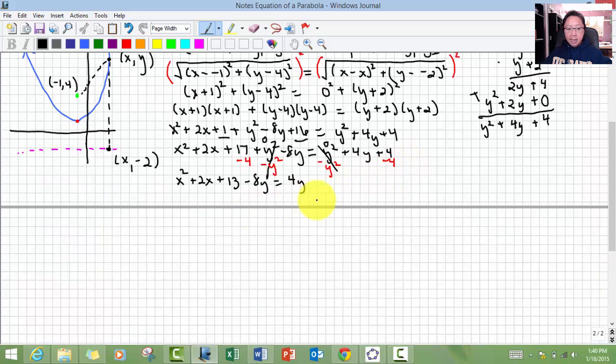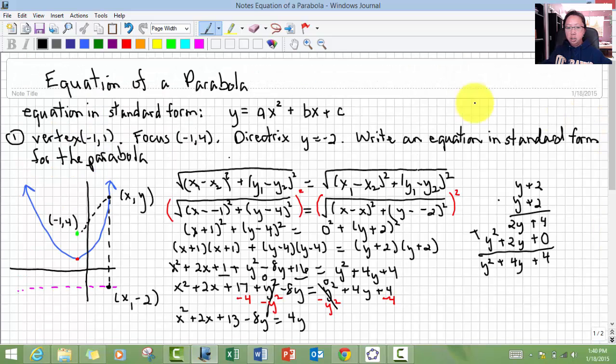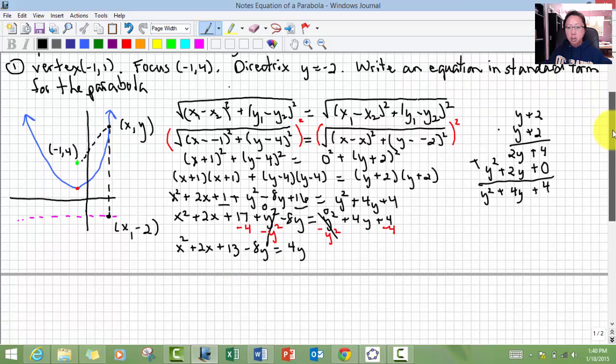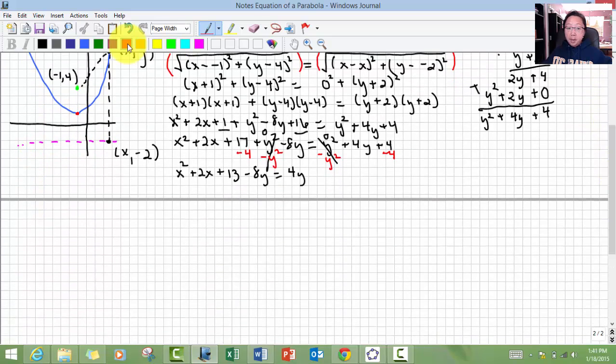Now I have like terms. Negative 8y and a 4y. So I want the y's to be all on one side because I'm trying to solve for the equation, and the equation standard form is y equals everything else. So I want y by itself. To get y to be on one side, I would need to add 8y to both sides. So now I'm left with x squared plus 2x plus 13. This cancels out to 0. It's equal to 12y. Then I'm going to need to divide everything by 12.